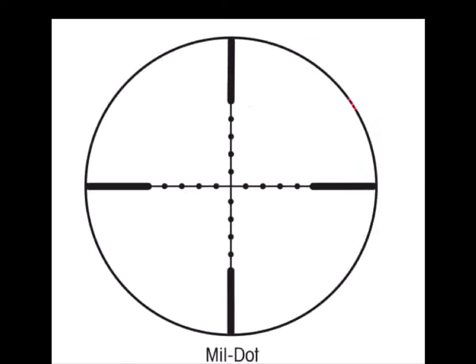How that translates to you is 3.6 inches from the center of one dot to the center of the other is one mil, 3.6 inches at 100 yards per 100 yards.